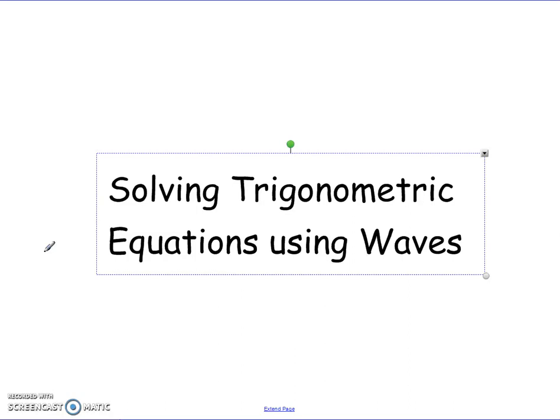Now in the last couple of videos we've looked at working with the wave equation, so writing something of the form p cos x plus q sine x in one of the four wave variation forms: k sine of x plus alpha, k sine of x minus alpha, k cos x plus alpha, or k cos x minus alpha.